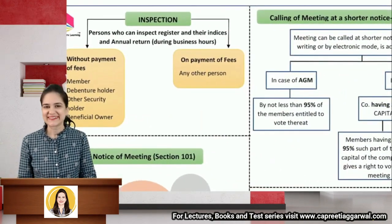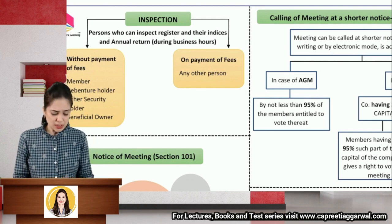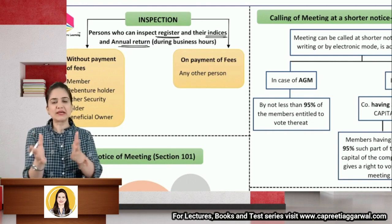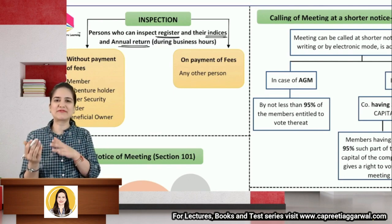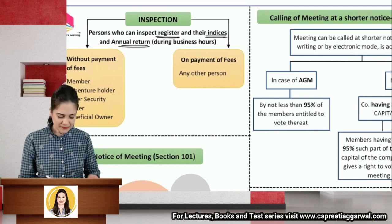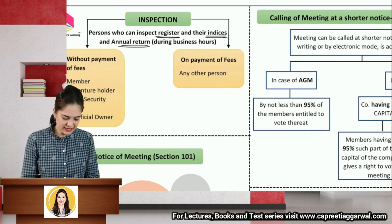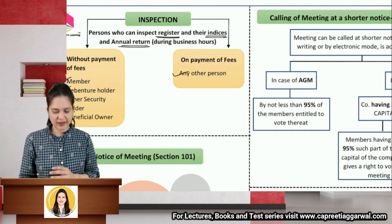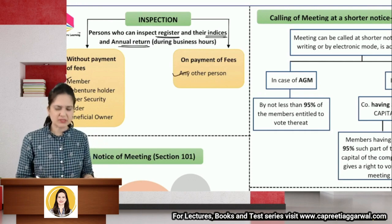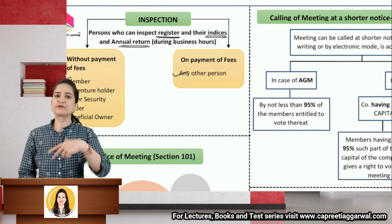Along with registers, the company maintains an index of registers and other books. An index is maintained so that details of members can be found conveniently — similar to a textbook index. Inspection can take place only during business hours (generally 9 to 6). Members, debenture holders, other security holders, and beneficial owners can inspect without fees; any other person must pay fees. Anyone can take extracts or copies of registers, paying the applicable charge.